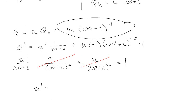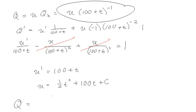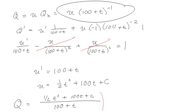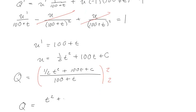So u prime equals 100 + t, which means u equals t²/2 + 100t + C. Combining with the guess Q = u/(100 + t), we get Q = (t²/2 + 100t + C)/(100 + t). Multiplying numerator and denominator by 2 to clear the fraction: Q = (t² + 200t + C)/(200 + 2t), where C is still an arbitrary constant.